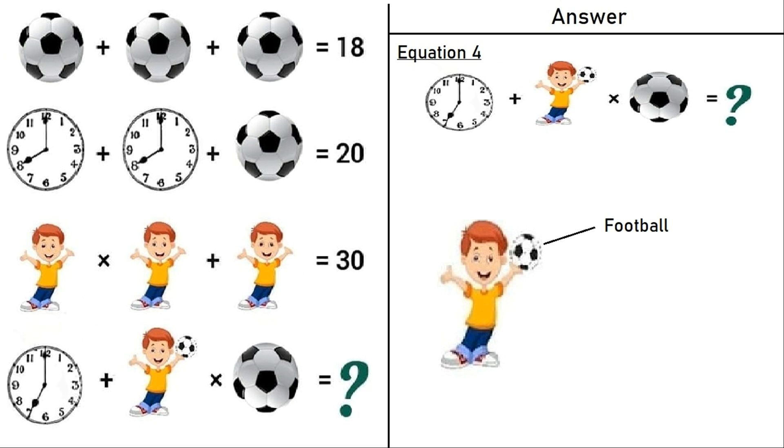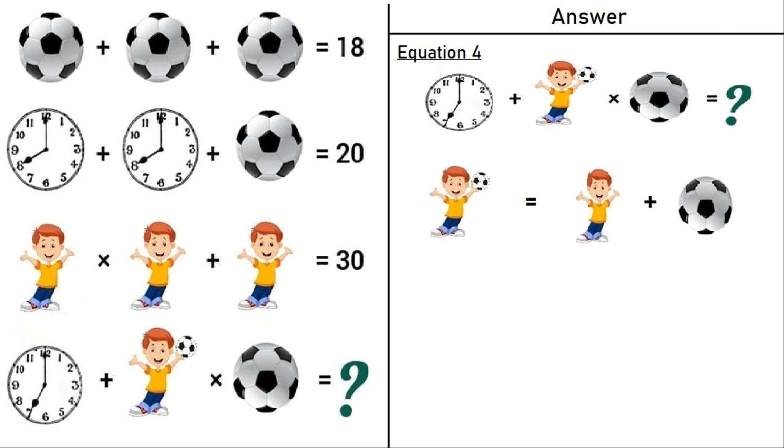If you see the boy in equation number 4, he is holding a football. A boy with football is equal to a boy plus a football. So a boy with football is equal to 5 plus 6, which equals 11.